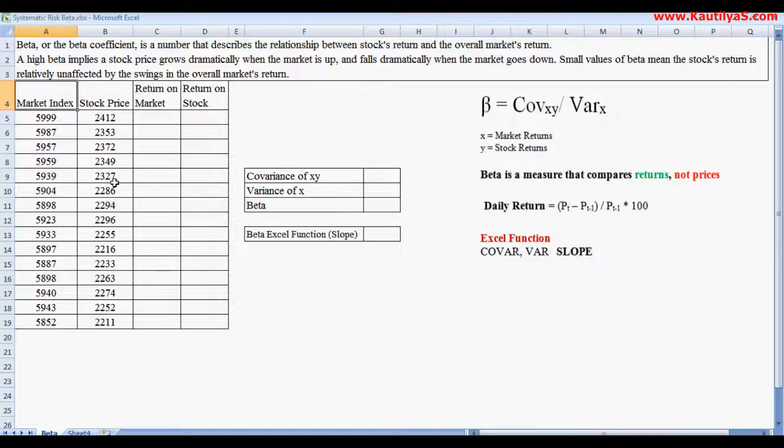First we need to calculate the return on market index as well as return on stock index. The daily return equals Pt, that is price of today, minus Pt minus 1, previous price, divided by previous price times 100.